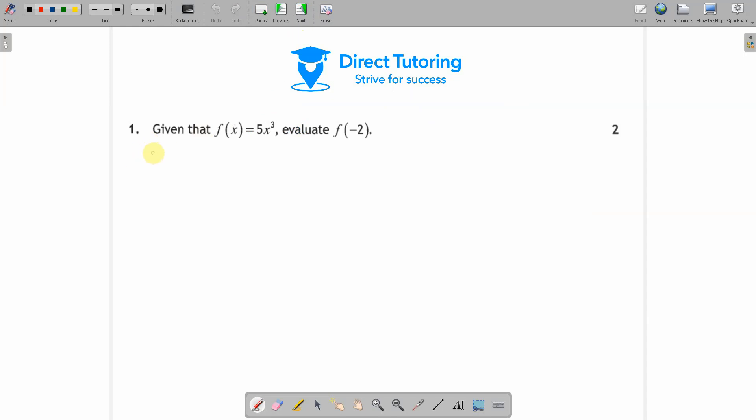Question number one of the non-calculator paper gives us a function f of x which equals 5x cubed. So f(x) = 5x³.